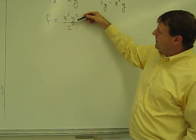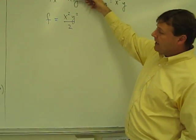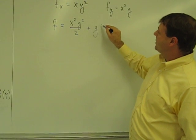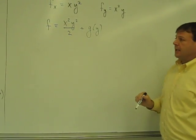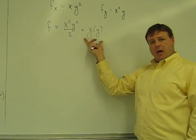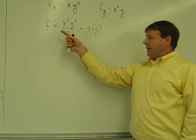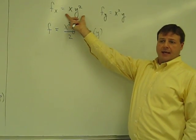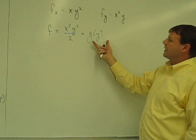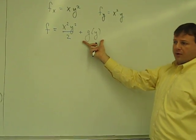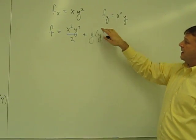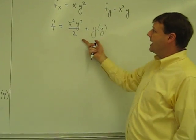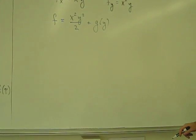Now, if I were to take the derivative with respect to X, I'd get that — but I could have also had a whole function of Y here. For example, if this were sine of Y, and I took the derivative with respect to X, this would just disappear and I'd still get that. So I have to allow for the fact that there might be a whole function of Y here. This is my first guess for the function F that I'm looking for.